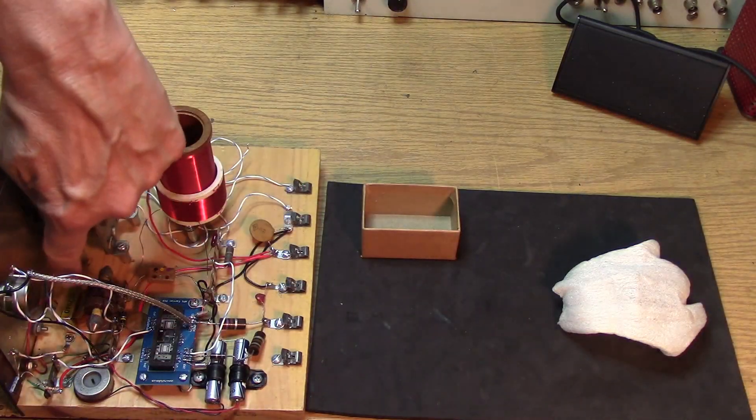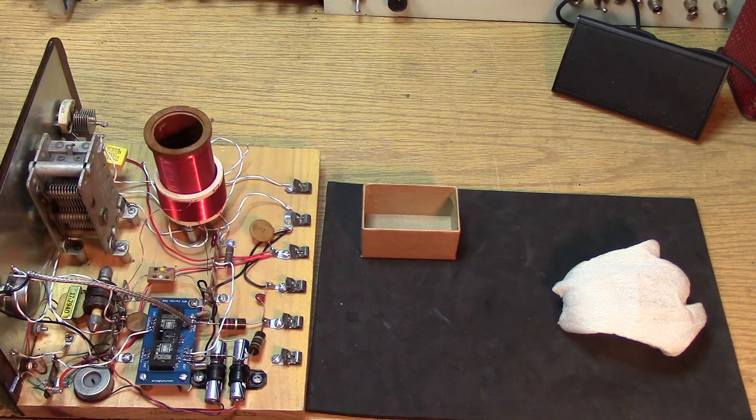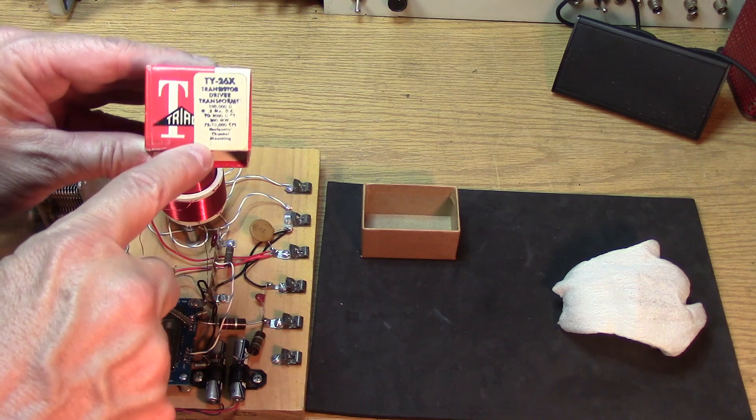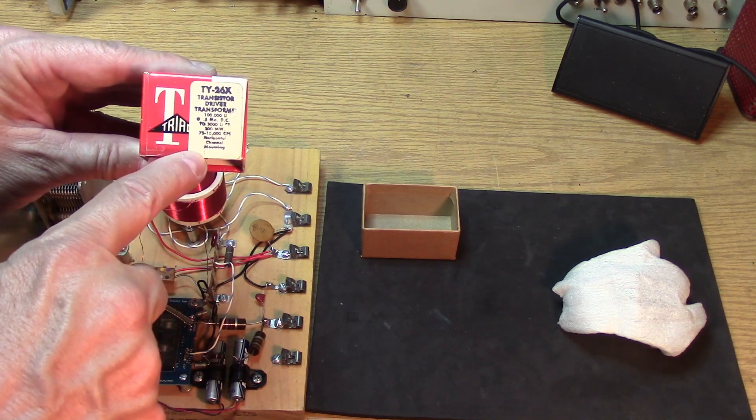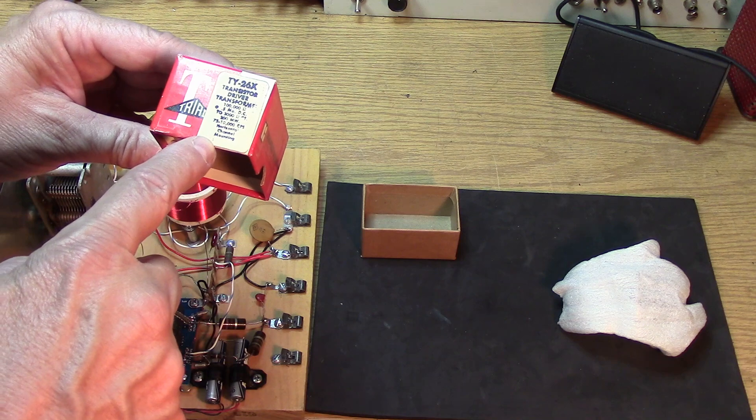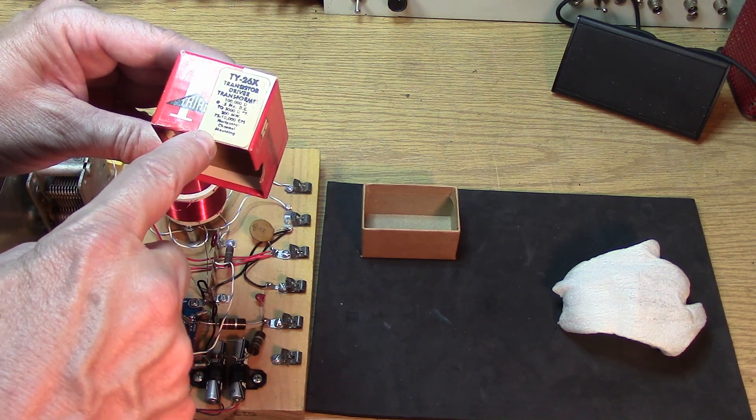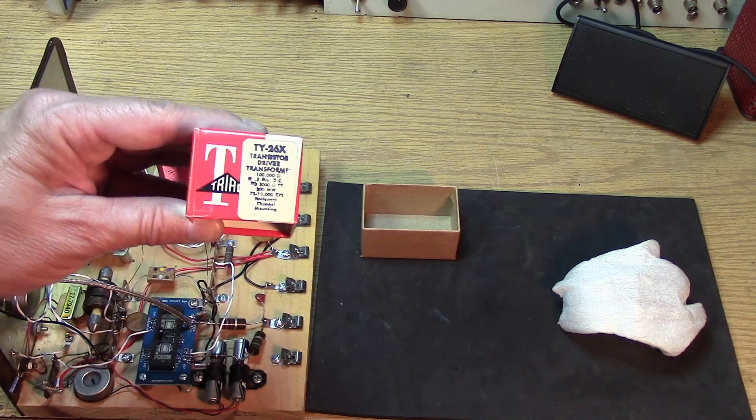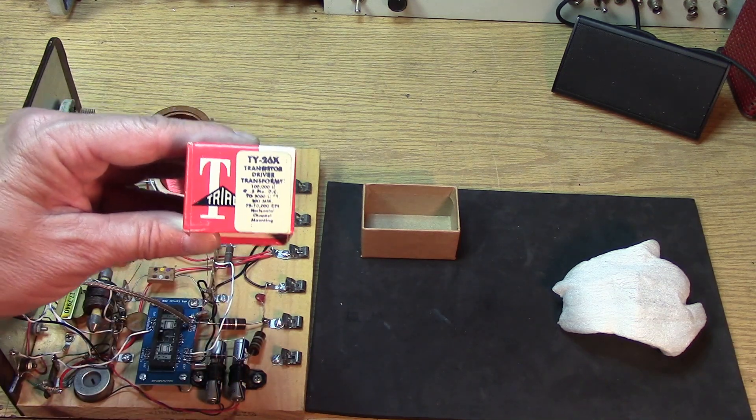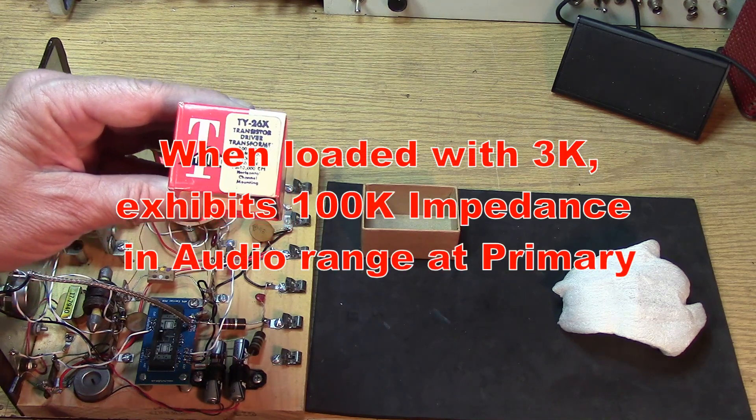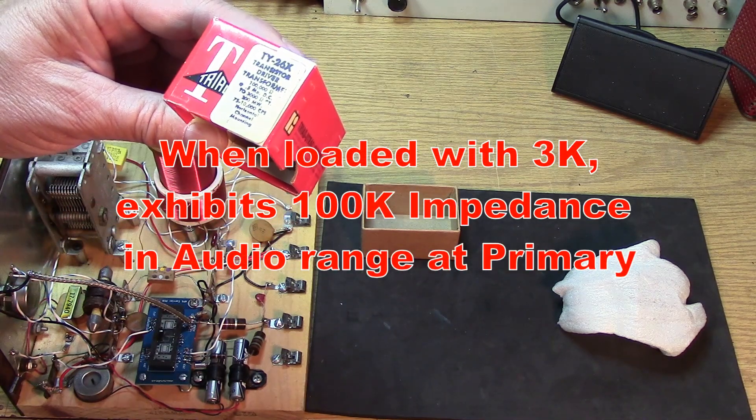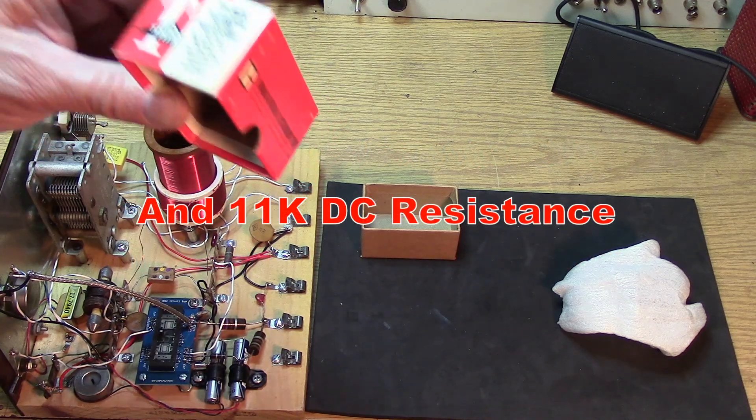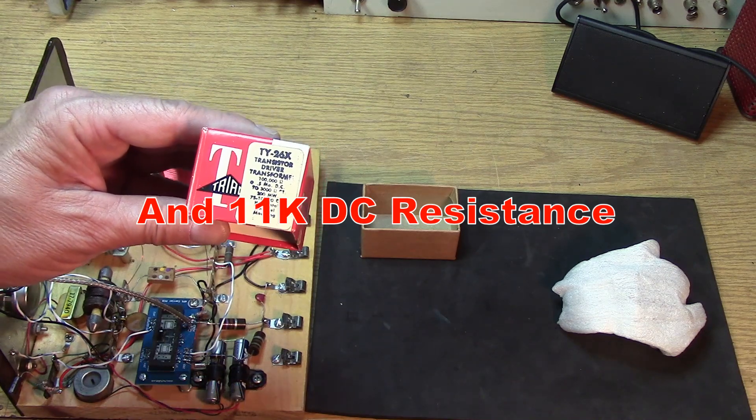We've added the little transformer. It has a primary of 100K according to the box and a secondary of 3,000 ohms. I think that's actually going to be a pretty good match for our headphones. They claim this thing is capable of 0.5 milliamps DC or 200 milliwatts.